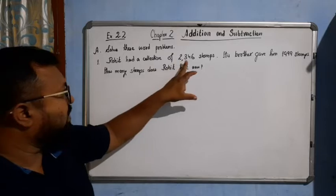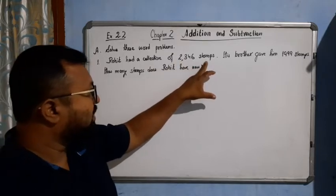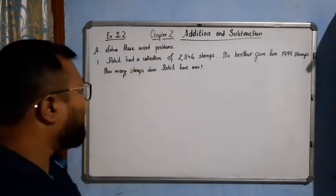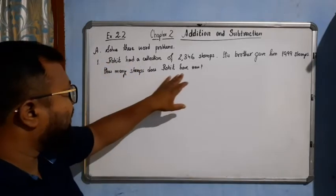Rohit had a collection of 2346 stamps. His brother gave him 10999 stamps extra. So, how many stamps does Rohit have now?